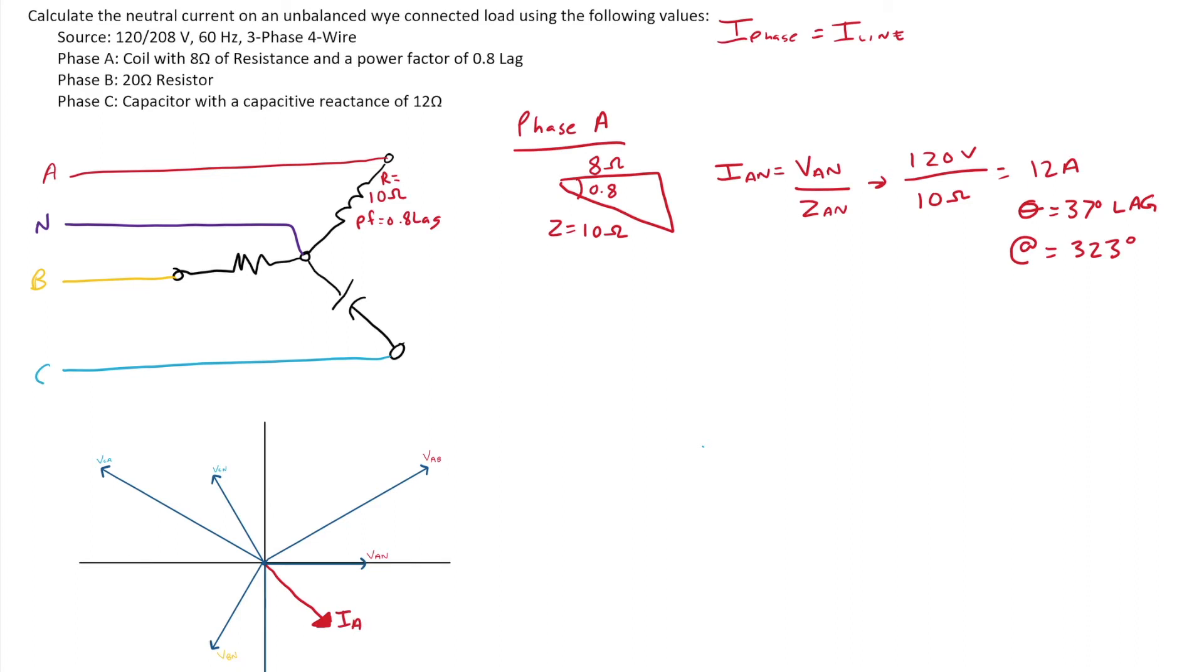Now we're going to go into phase B. So phase B was our resistive load. So nice and simple. We're going to do that same formula. IB to N equals VB to N over ZB to N. It's a resistor. So that's my total opposition.